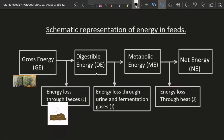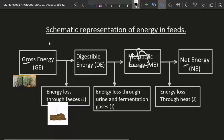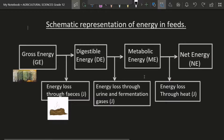In your exam they might give you this schematic presentation with missing parts and ask you to fill them up — for example, removing metabolic energy and asking you to identify it. You have to know that gross comes first and net comes at the end. Metabolic energy is in the large intestine, and digestibility is in the stomach. Energy is measured in joules, which is why J's are used here.